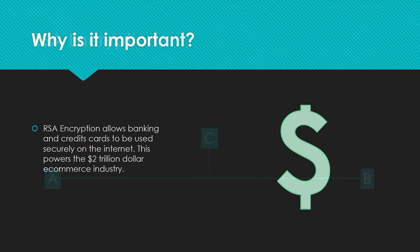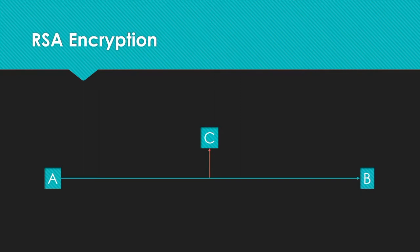This powers the $2 trillion e-commerce industry. The way RSA encryption works is it creates a private key and a public key. The role of the public key is to encrypt data and can be distributed amongst everyone safely. The role of the private key is to decrypt data and should be stored securely.